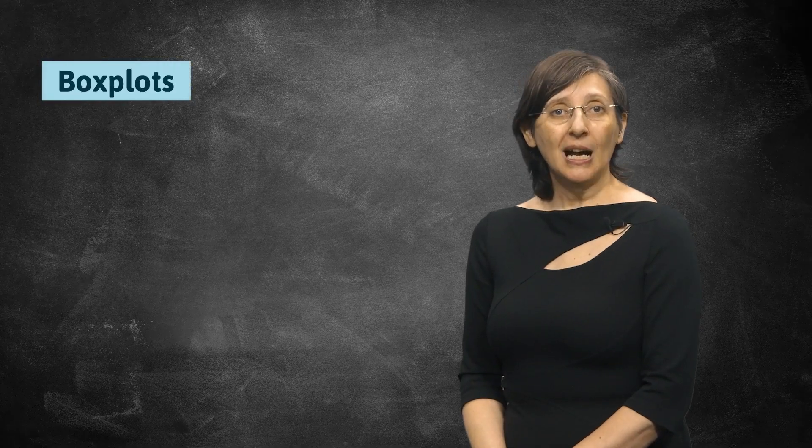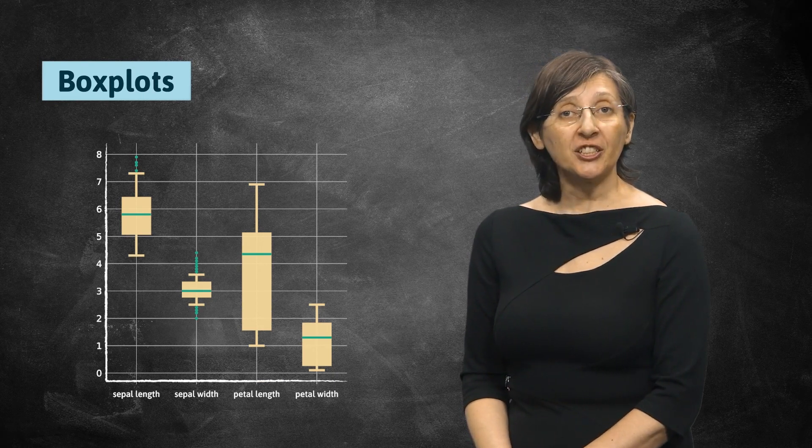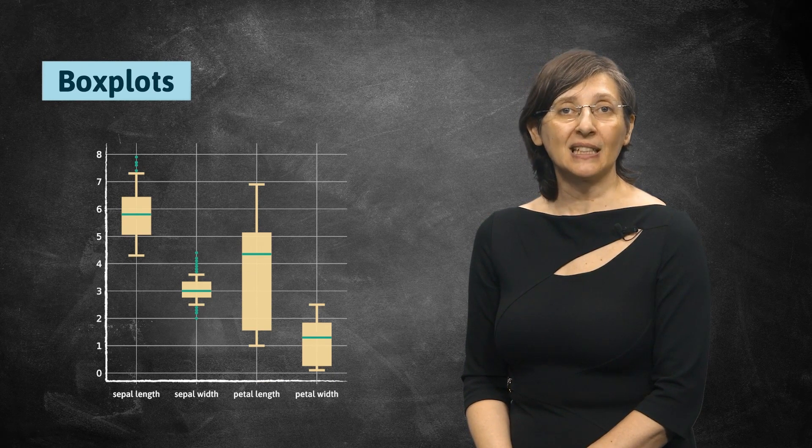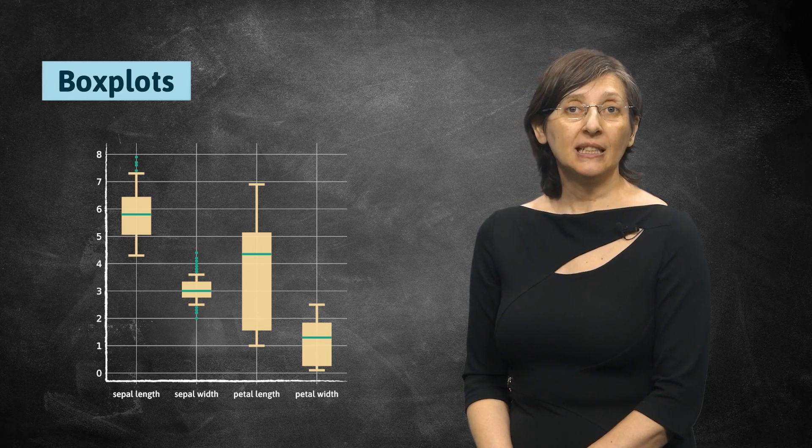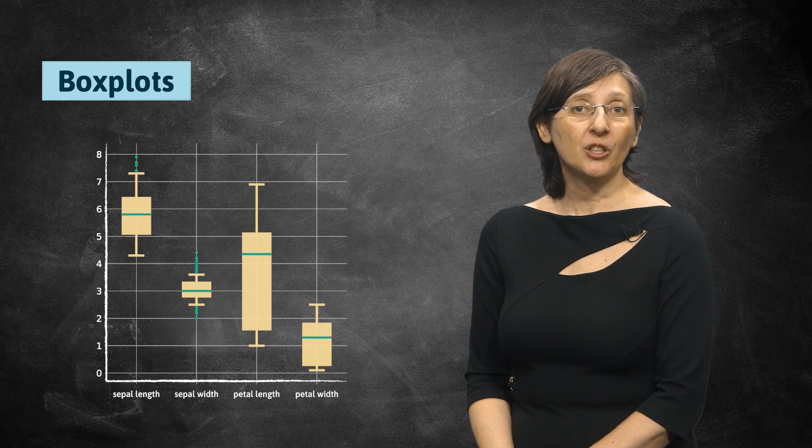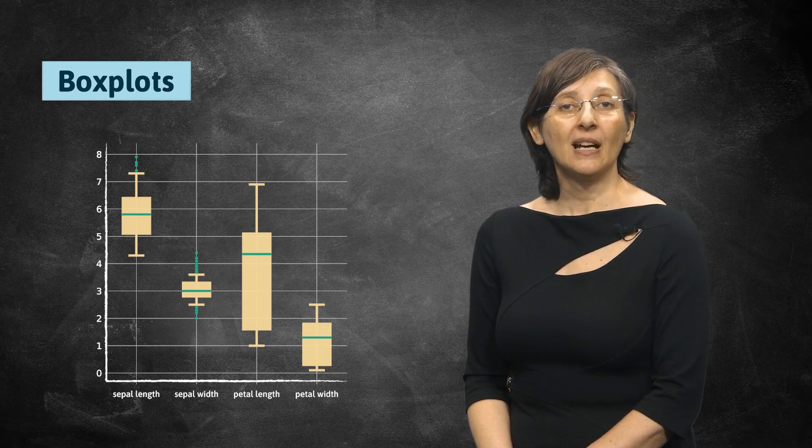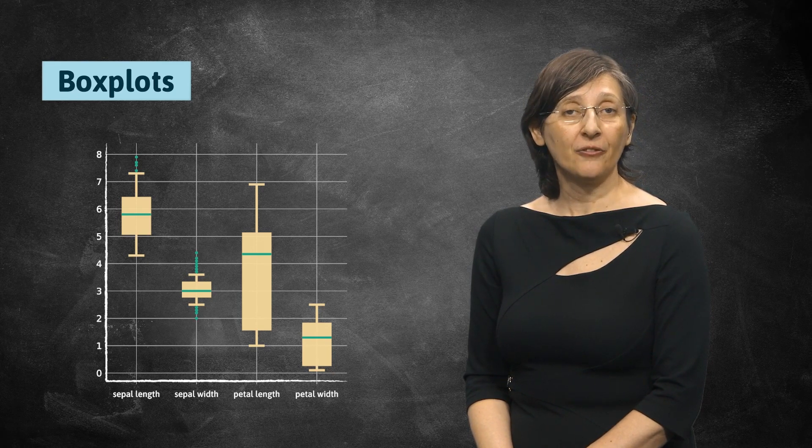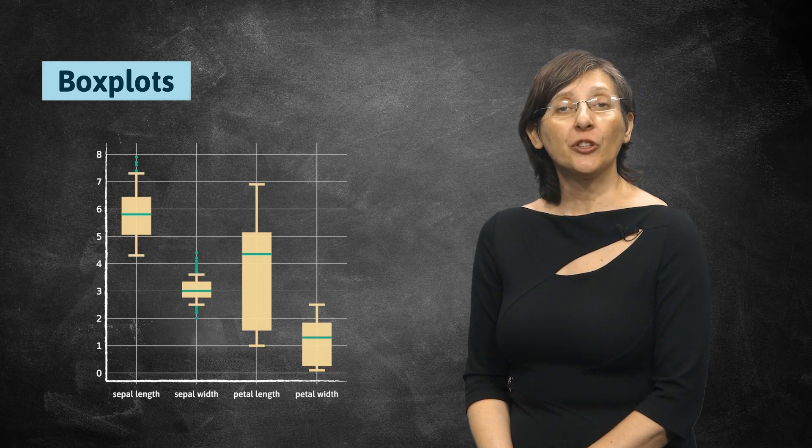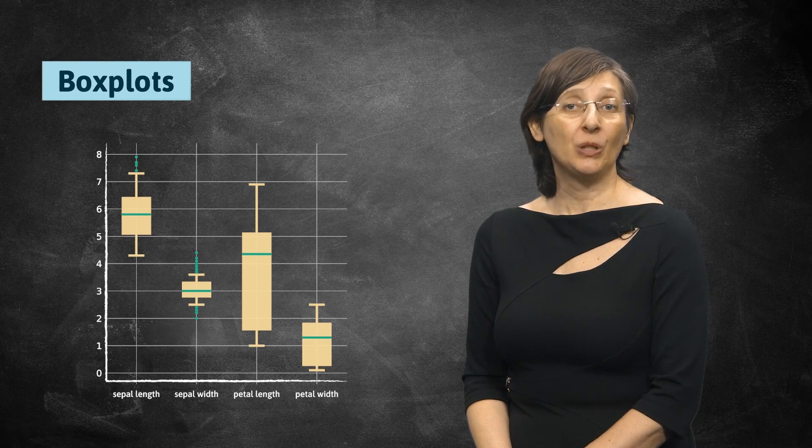Boxplots are special charts perfect to stand for a variable's five-number summary. In this chart, the data is represented with a box that starts in the first quartile and ends in the third one, and where the median is signaled with a mark inside the box. In addition, there is a line that crosses the box from the non-outliers limits, the first quartile minus 1.5 IQR, and the third quartile plus 1.5 IQR. This line is usually called whisker. If outliers are present, they are represented as dots beyond the whiskers.